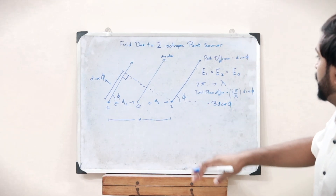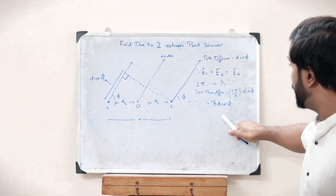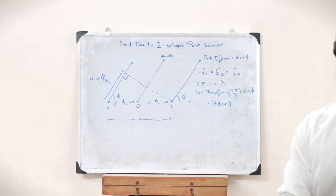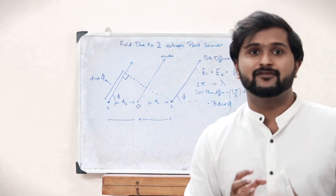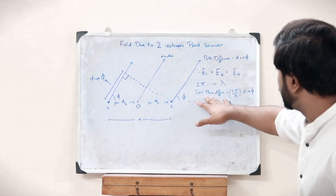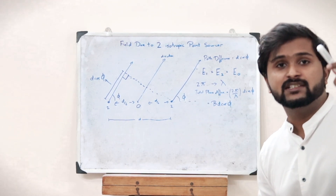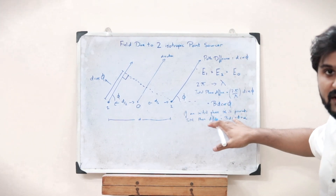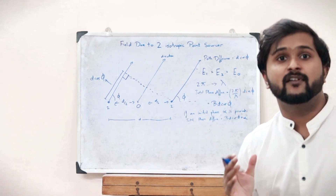In β d cos phi, beta is a constant representing 2π/λ and d is the spacing between the two antenna sources. If a particular initial phase of alpha is present in the system, then the total phase difference becomes β d cos phi plus alpha.